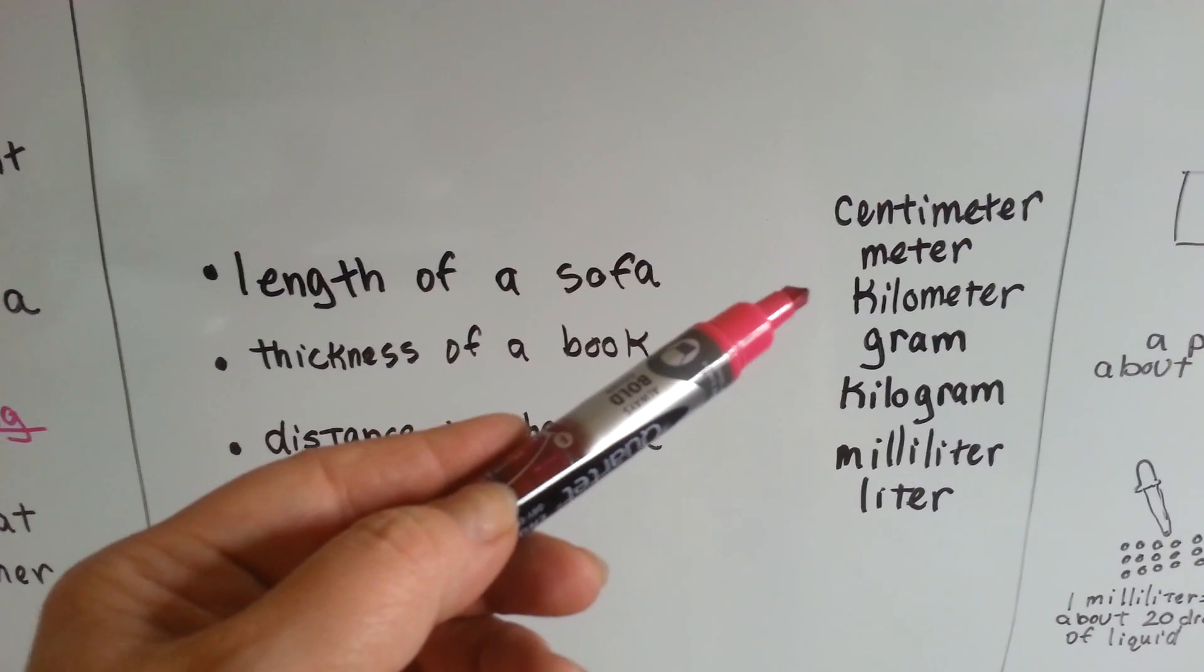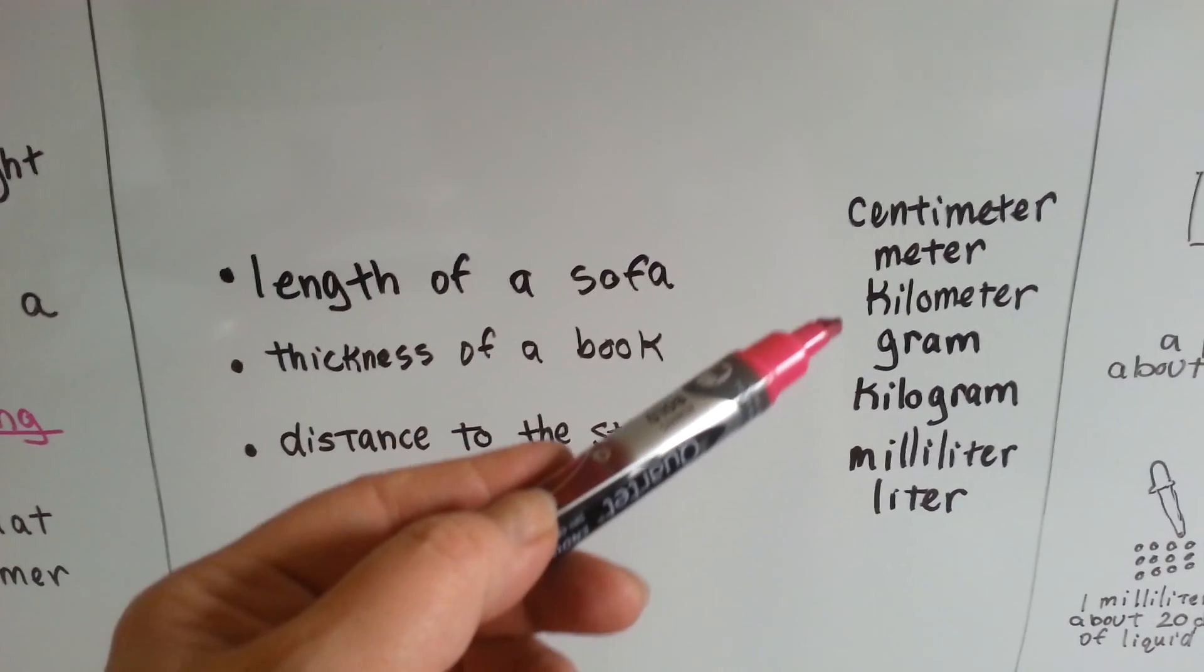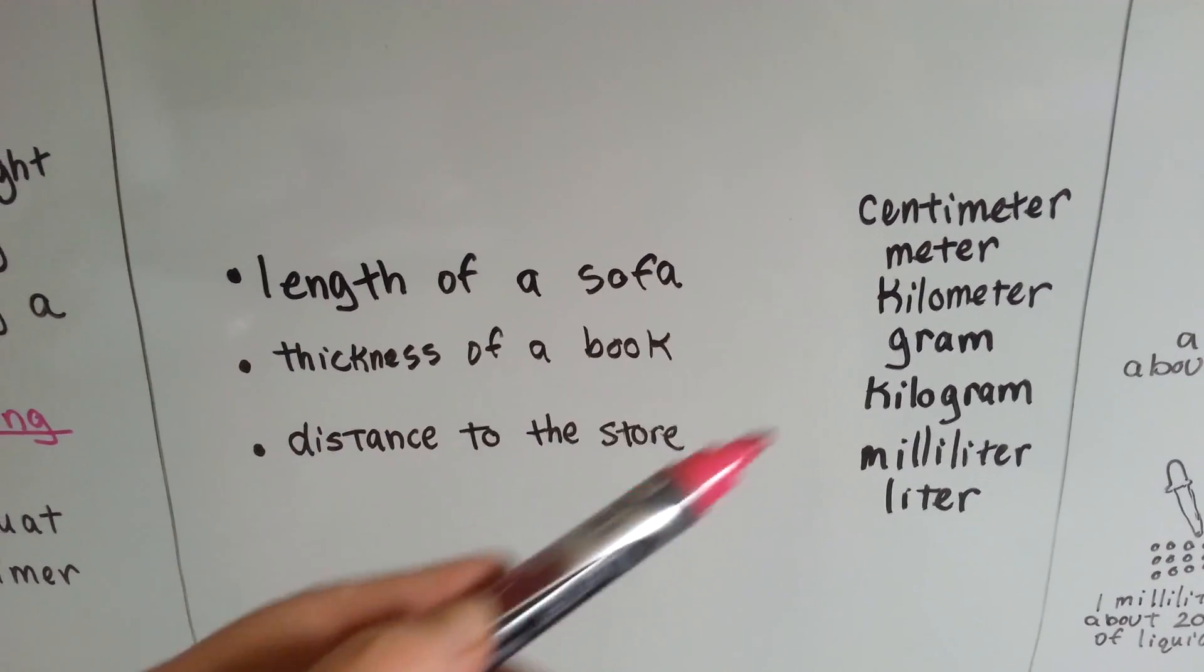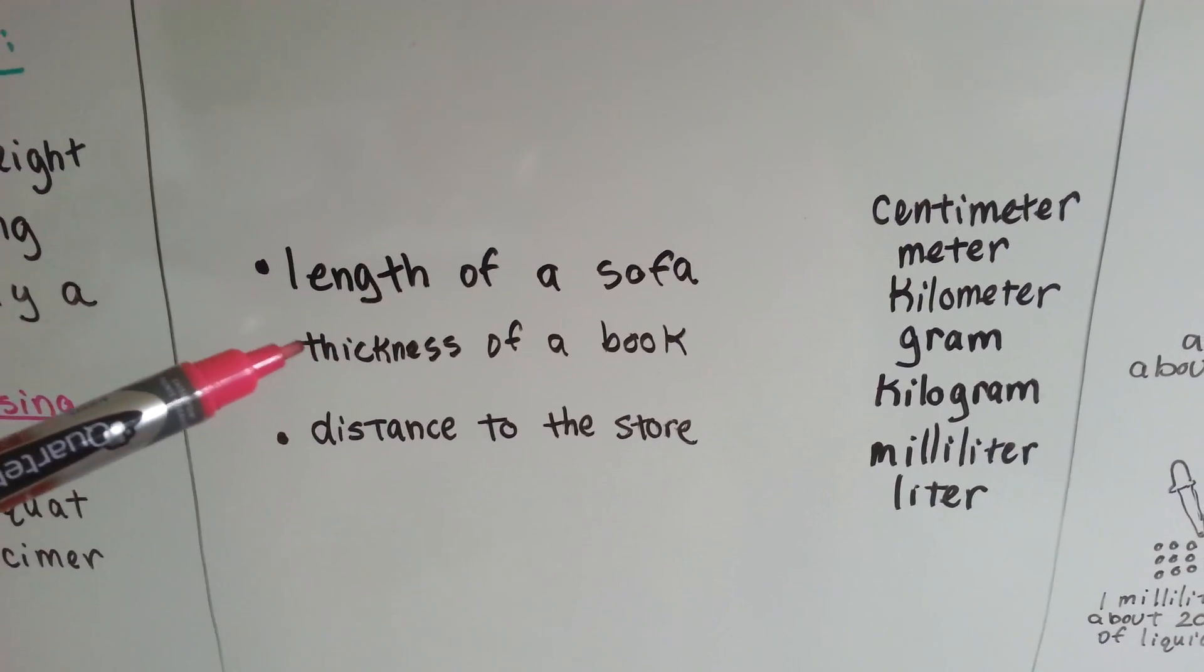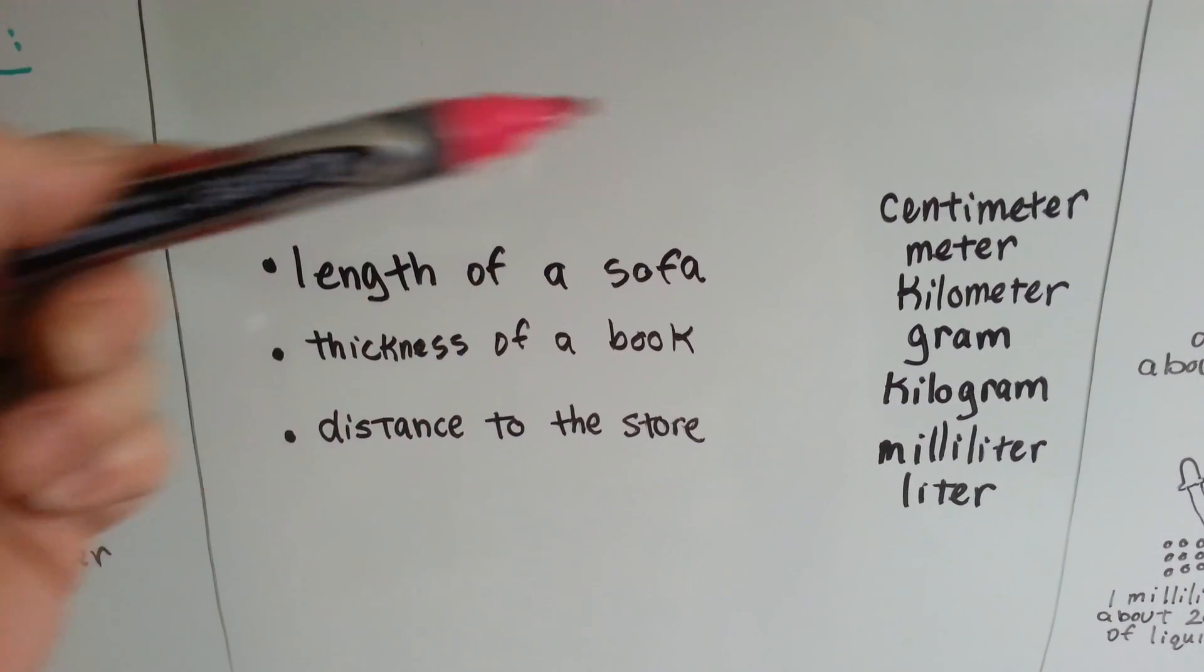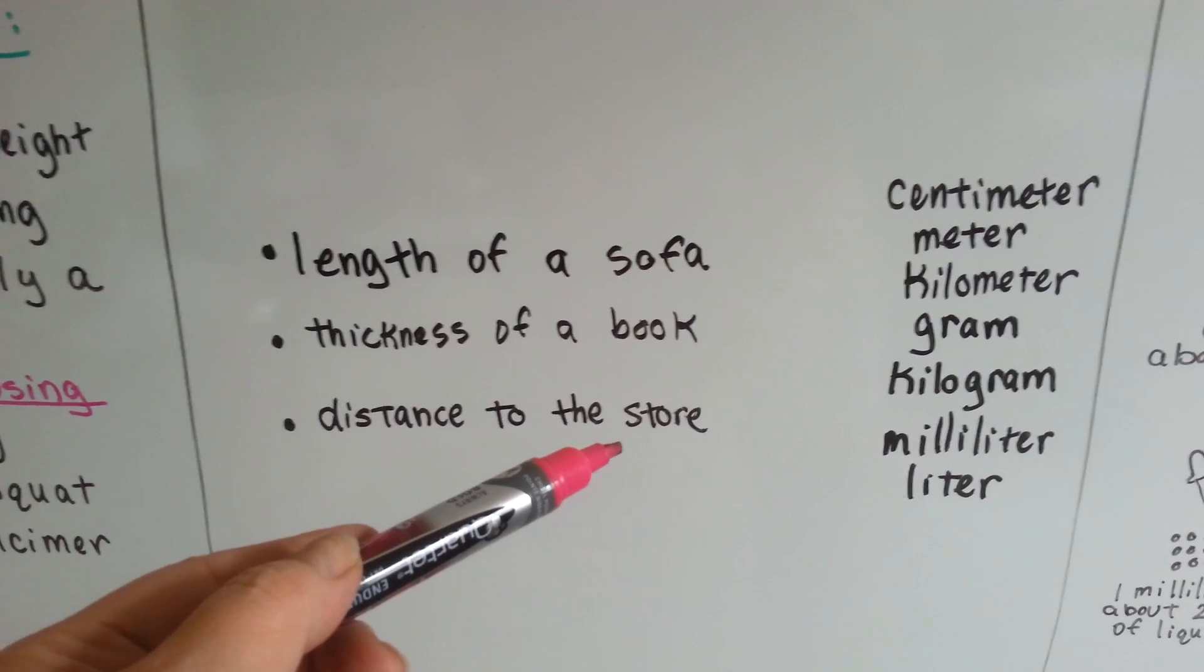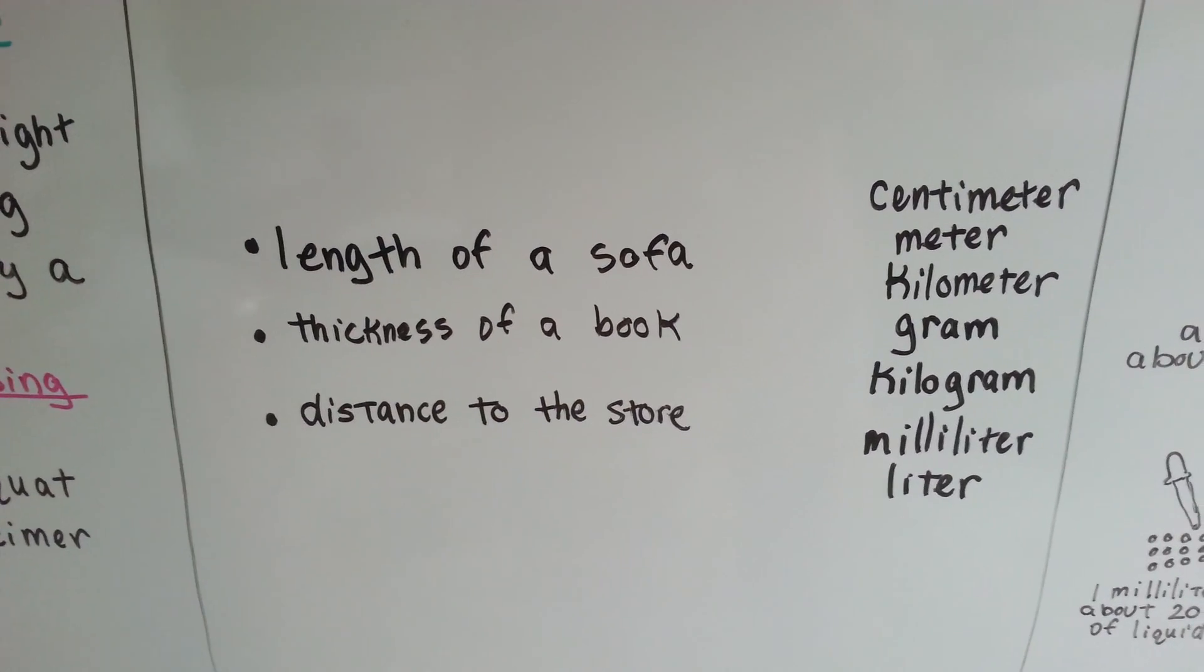Well, you wouldn't say a kilometer, because that's ten minutes of walking. That's a pretty big sofa. You'd probably say meter. How about the thickness of a book? Well, that would be about a centimeter. How about the distance that you walk to the store? Now that might be a kilometer, right?